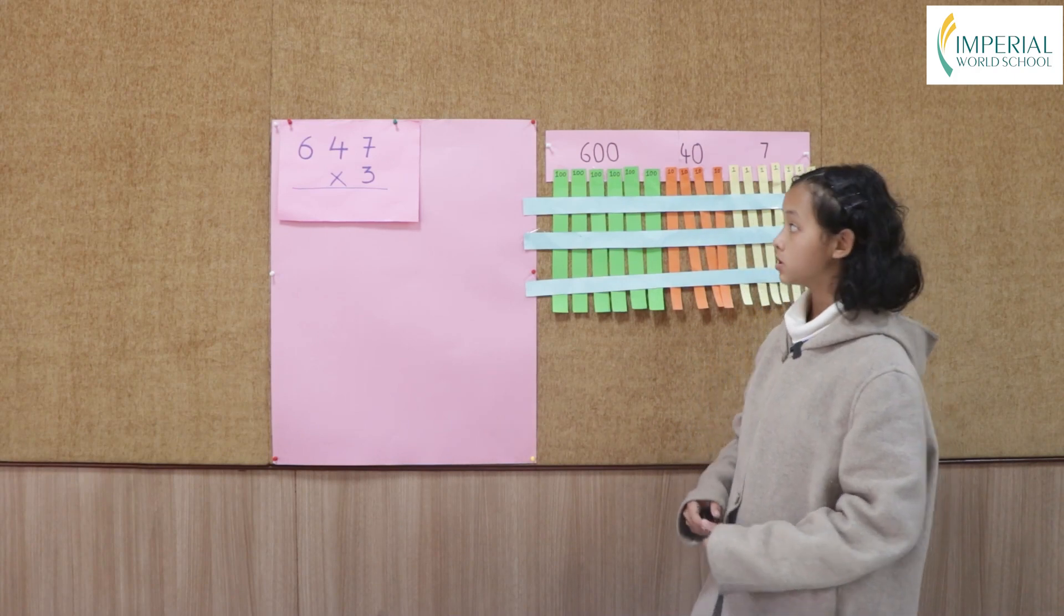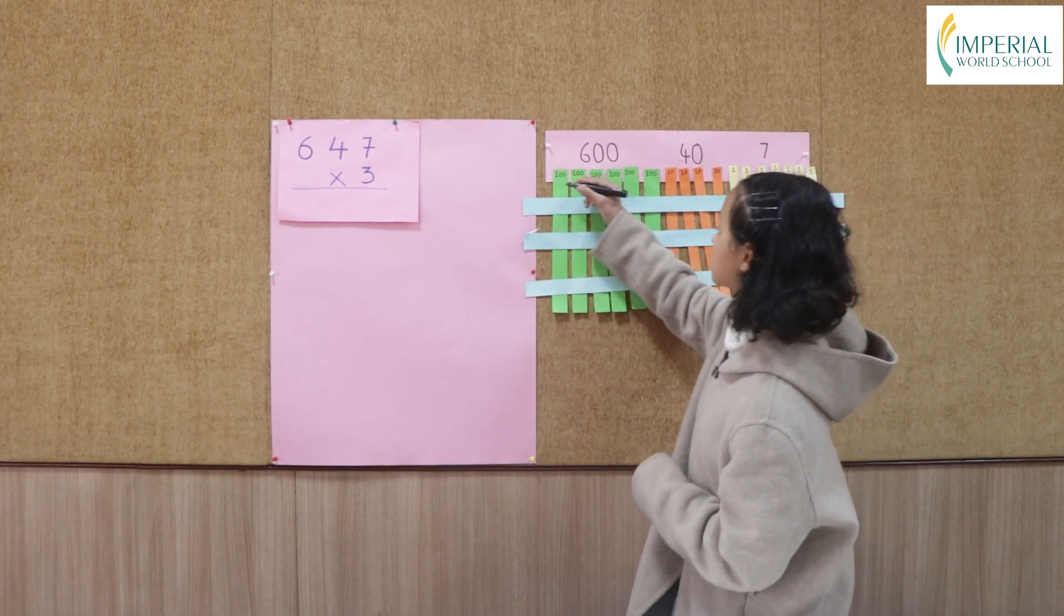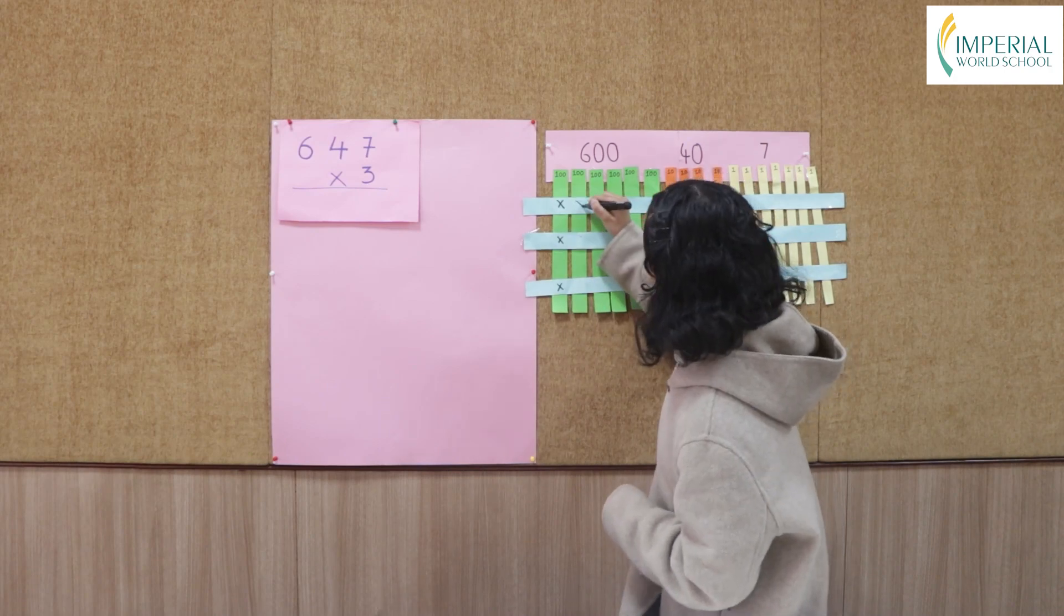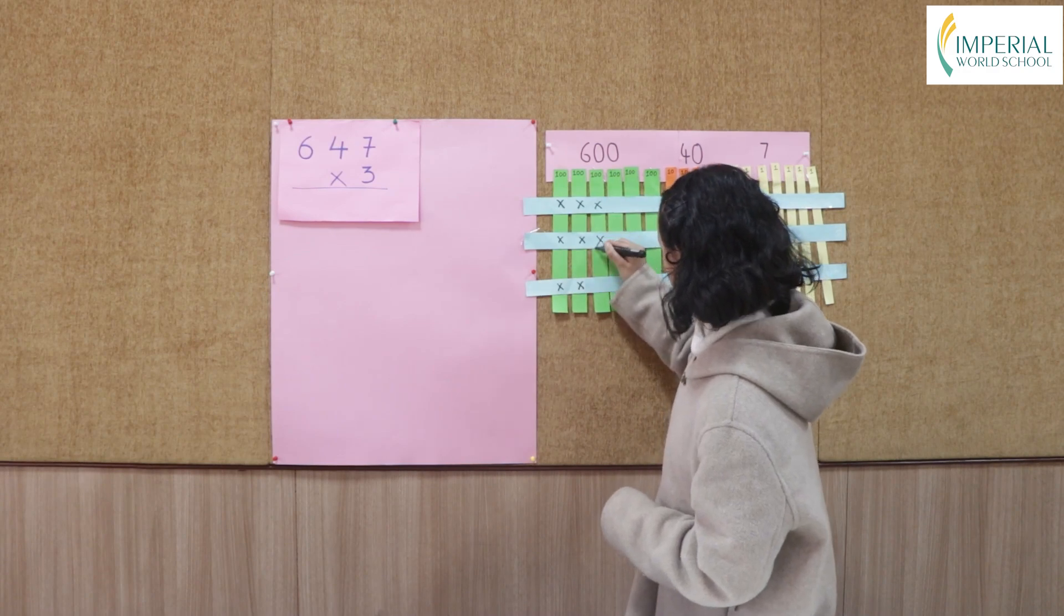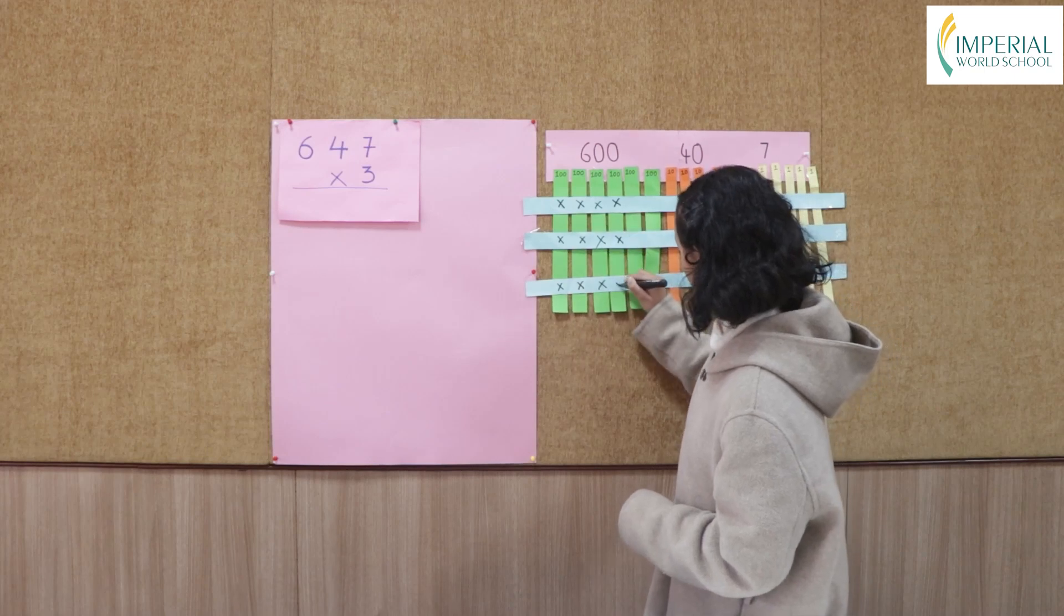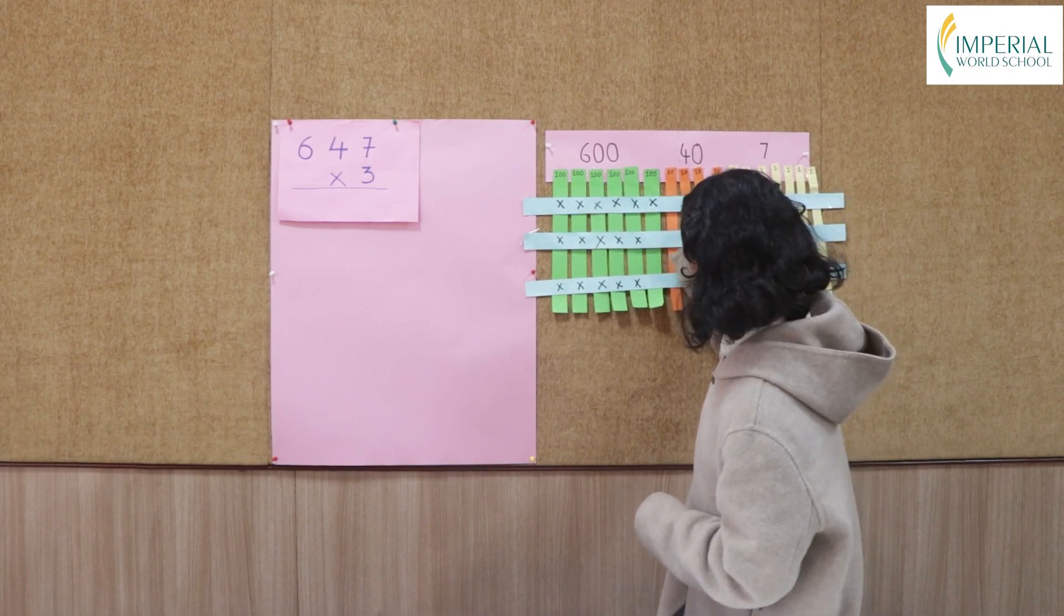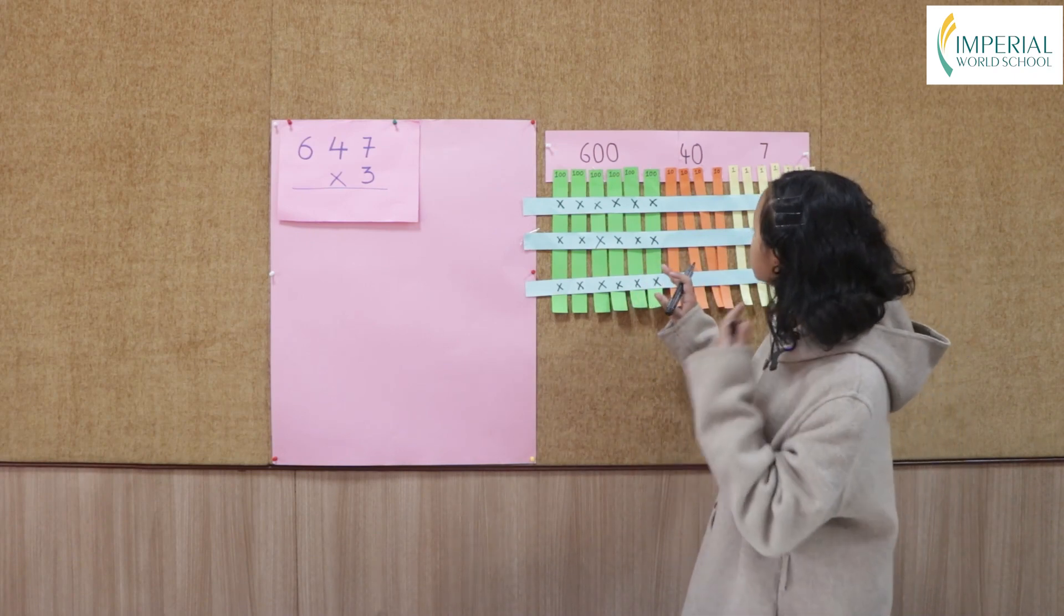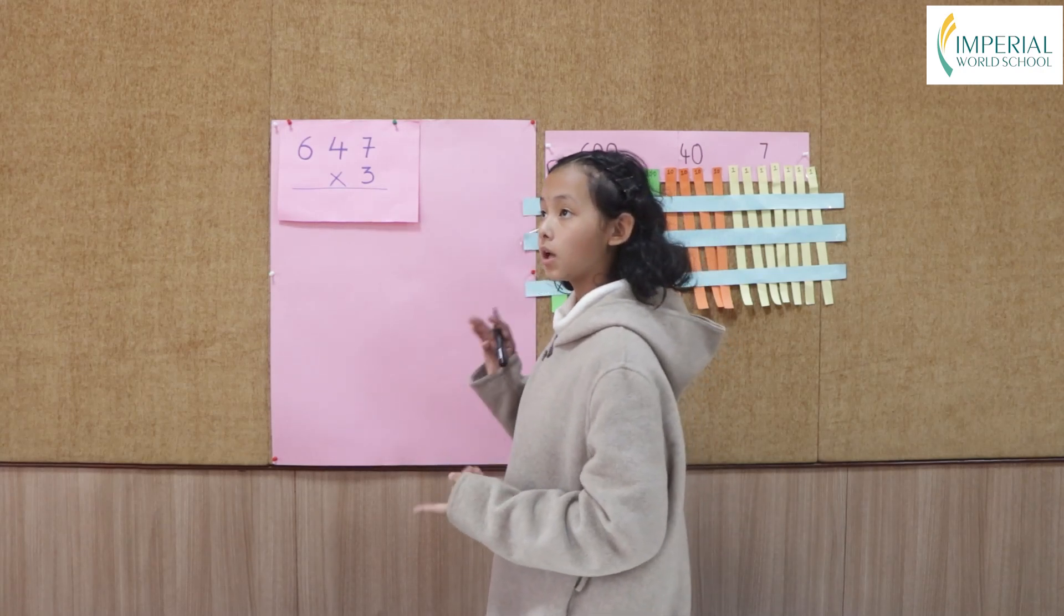Now I'm going to write the intersection part of 100s, 10s, and 1s. 1, 2, 3, 4, 5, 6, 7, 8, 9, 10, 11, 12, 13, 14, 15, 16, 17, and 18. We have 18 intersection parts. Now I'm going to do 18 times 100.